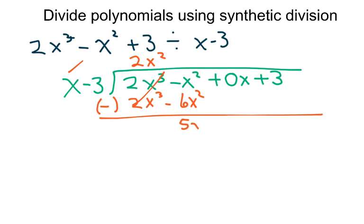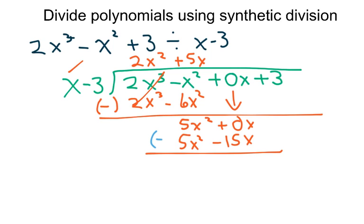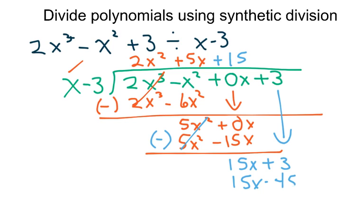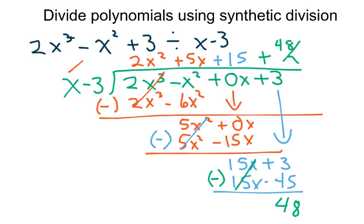That gives us 5x squared. Bring down the 0x and do it again. What times x gives you 5x squared? That would be 5x. So that gives you 5x squared minus 15x, and then we subtract. That goes away, and you have 0 minus a negative 15, which is plus 15x. Bring down the 3, giving plus 3. Then plus 15 times x is 15x, minus 45. When you subtract, that goes away — minus a negative gives positive 48. So your answer is your quotient plus the remainder, which is 48 over x minus 3.